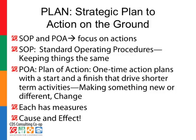Planning: strategic plan to action on the ground — SOP and POA. These focus on actions. SOPs are standard operating procedures, basically designed to keep things the same. We have standard operating procedures in our deli, food safety, pricing, and labeling — things trying to keep things consistent. A POA, or plan of action, is a one-time action plan, more like a project. It has a distinct start and finish that drives shorter-term activities — basically making something new or different. So rather than an SOP, which keeps things the same, a POA is trying to change something.